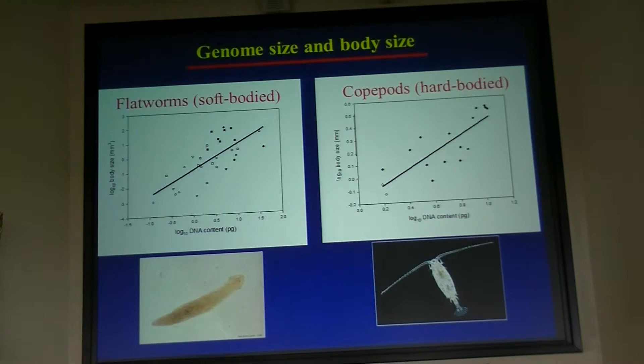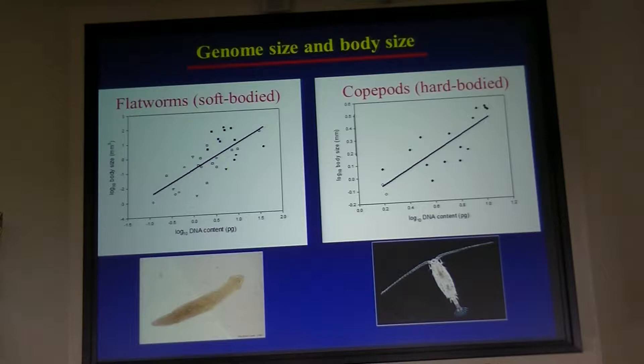We've looked at body size in a few groups, including soft-bodied things like flatworms as well as hard-bodied things like crustaceans, and in some invertebrates you do see this relationship. It's not universally true, and I think in part because in mammals most of the difference in body size is actually due to difference in cell number and not cell size. A whale versus a shrew don't differ in cell size that much — they differ in cell number. But in cases where variation in cell number is fairly small, or even potentially constant, you do find this positive relationship with genome size.